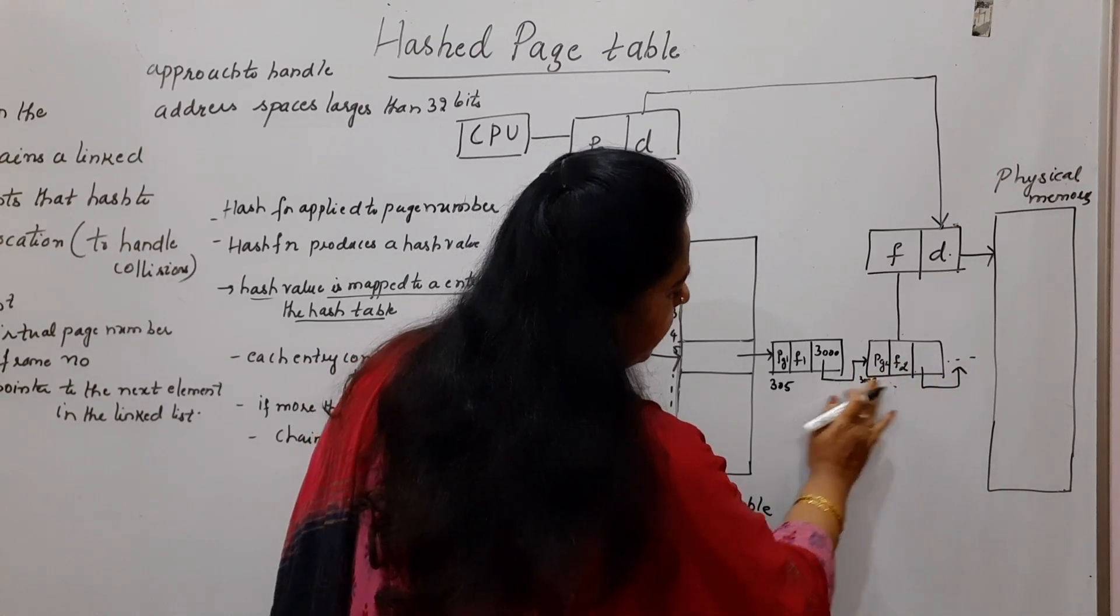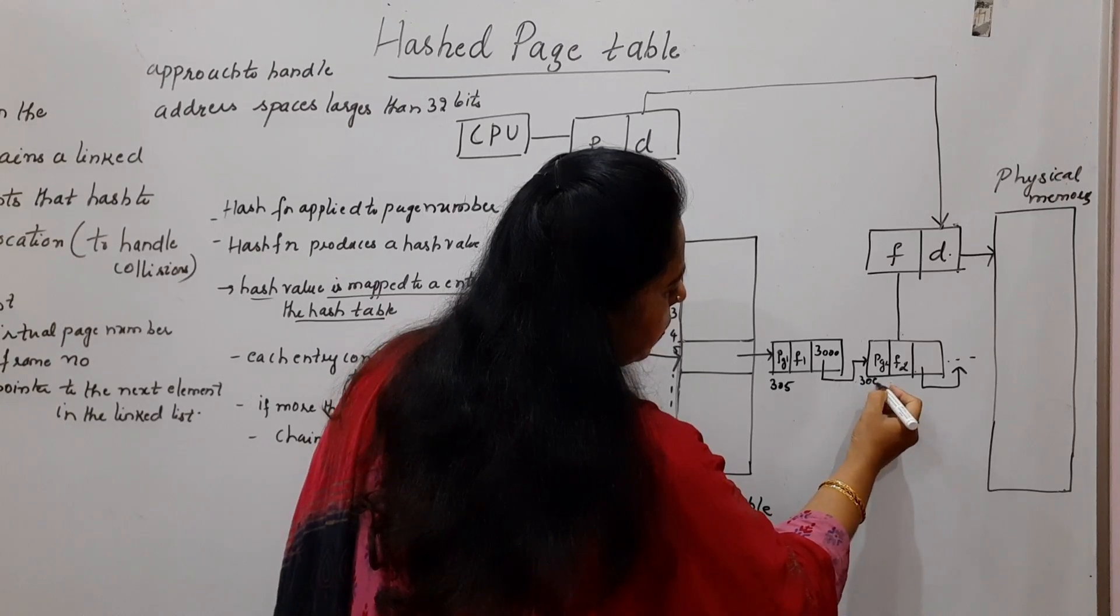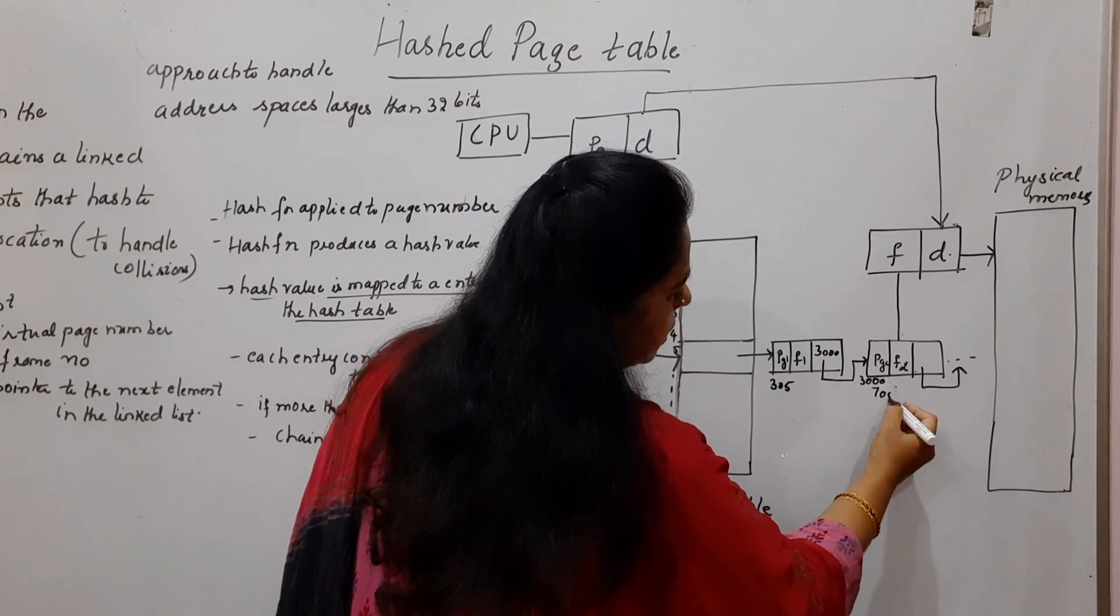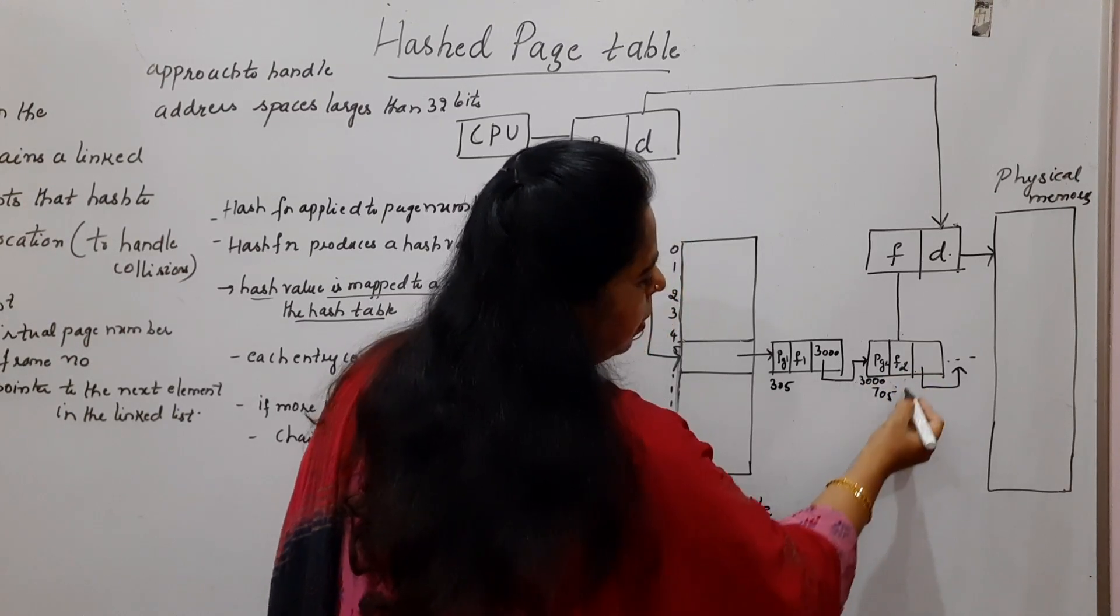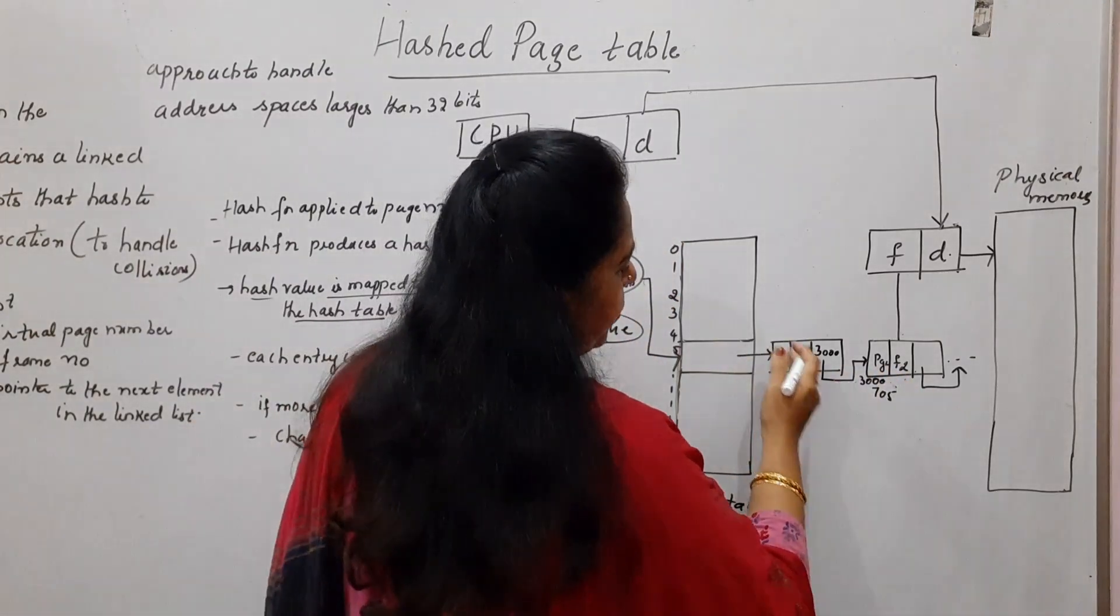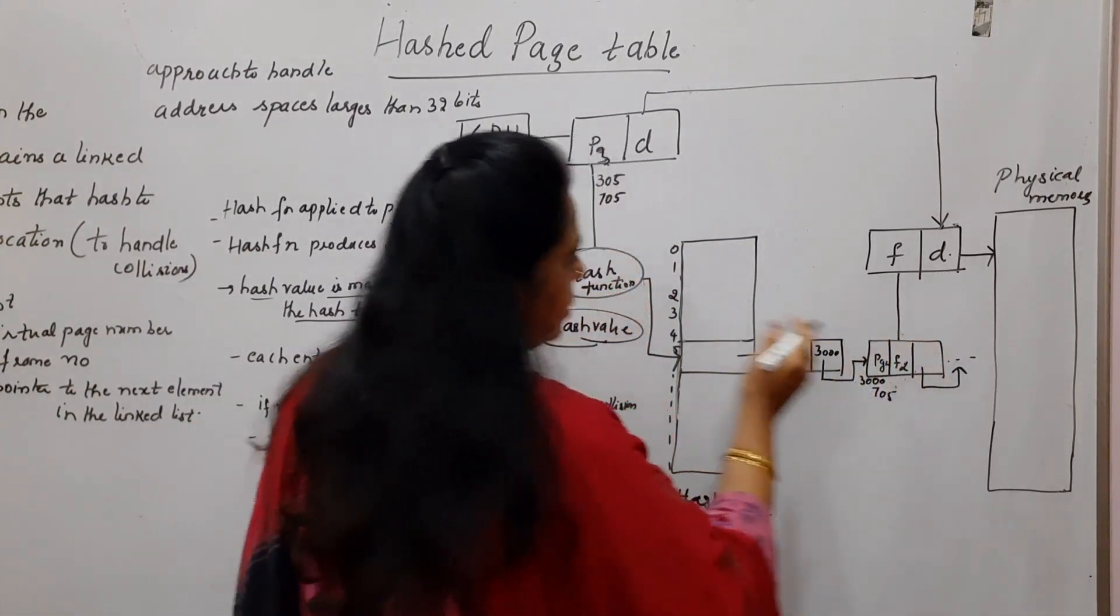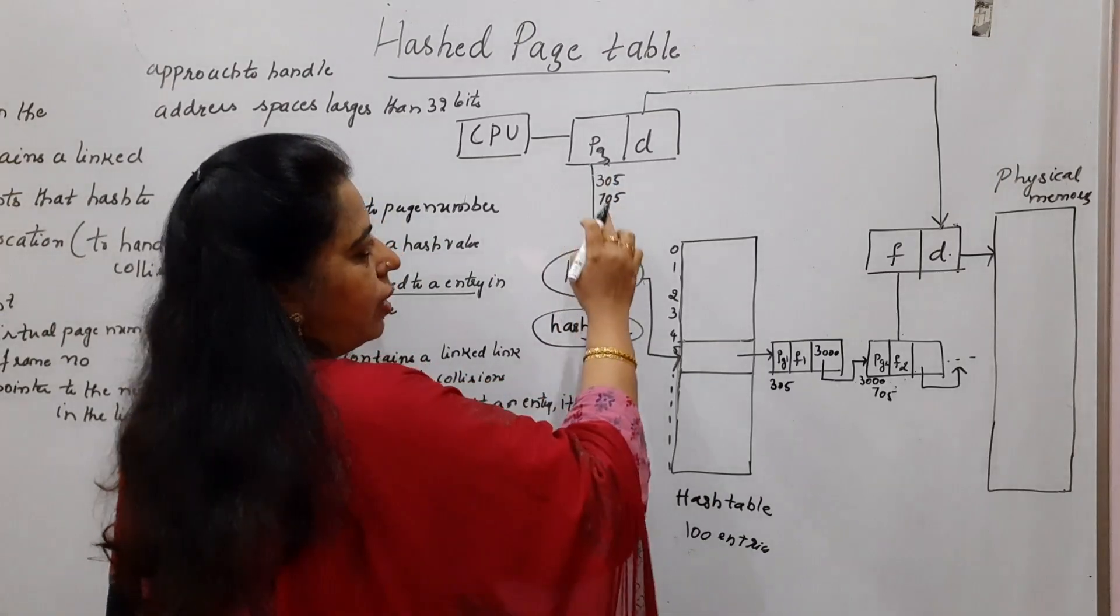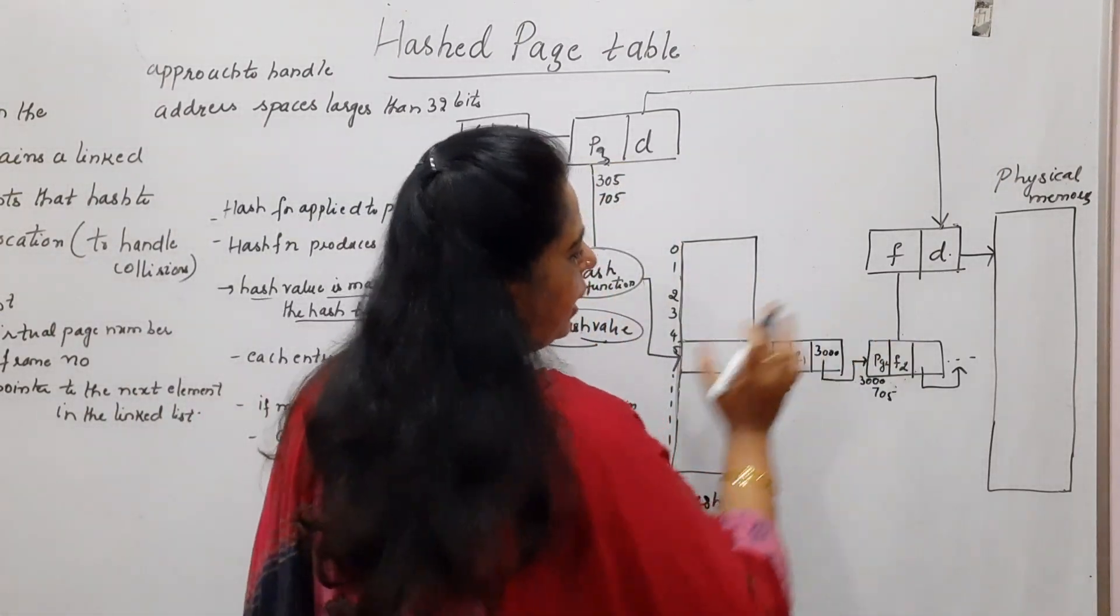This information is stored here. It is having the page number 705 and some frame number. So this is how the complete entries which are linked, which are chained, are searched until whatever is the page number that is generated from the logical address is found.